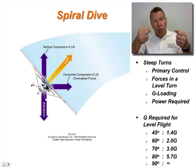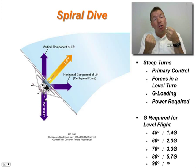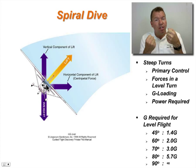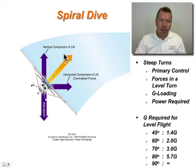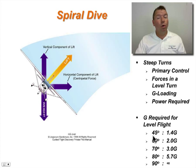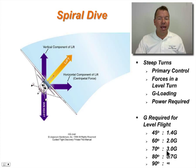When you roll into an angle of bank, you pull back, increasing the lift the wings are producing, which keeps your vertical component the same depending on how much you pull. When you pull back, you feel G's. Geometrically, given G-loads you have to pull at various bank angles in order to hold altitude in a level turn — 1.4 G's for 45°, 2 G's for 60°, 3 G's for 70° angle of bank, and 5.7 G's for an 80° angle of bank.